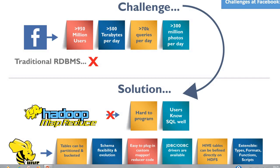Before 2008, all the data processing infrastructure in Facebook was built around a data warehouse based on commercial RDBMS. This infrastructure was capable enough to suffice the needs of Facebook at that time, but as data kept growing very fast, it became a huge challenge to manage and process this huge dataset. According to a Facebook article, the data scaled from a 15 terabyte dataset in 2007 to 2 petabytes of data in 2009. Facebook products also involved analysis of data like audience insights, Facebook Lexicon, and Facebook advertisements.